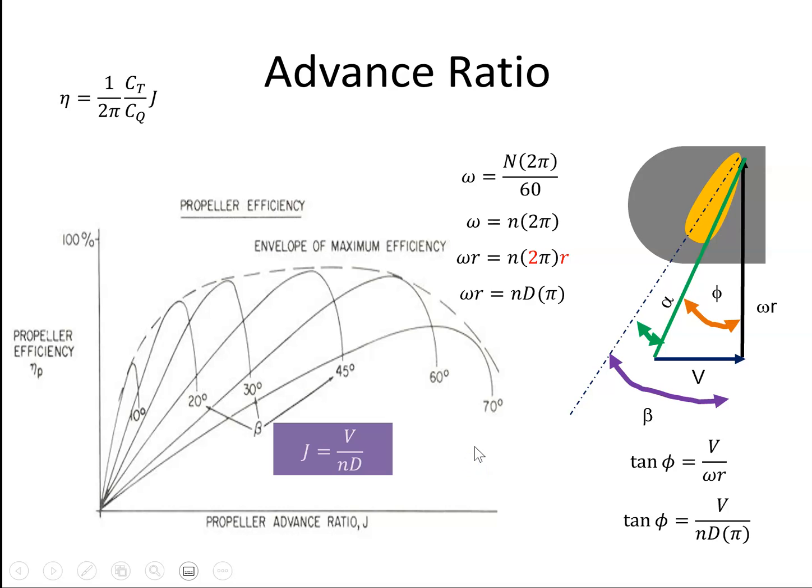Now, we can probably show, and we might do a video on this at some later stage, that the efficiency of the propeller is 1 over 2 pi, coefficient of thrust of the propeller, 1 over coefficient of torque, times j. So we have the j and the pi, there's the missing link, if you like, creeping in there.